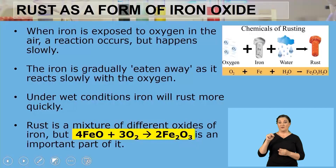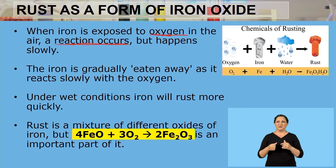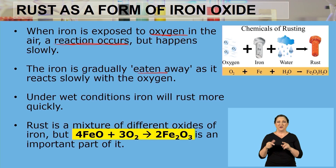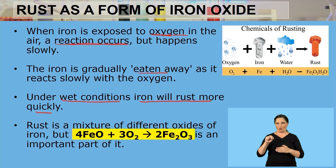When iron is exposed to oxygen in the air, a reaction occurs. This chemical reaction happens slowly if the iron is not near the ocean — the iron is gradually eaten away as it reacts slowly with oxygen. However, under wet conditions, such as near the ocean where there is acid, salt, and moisture, the iron will rust more quickly.